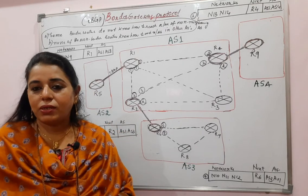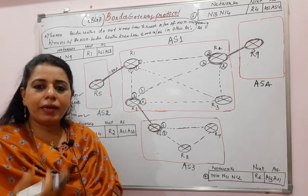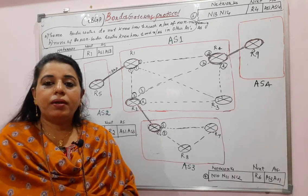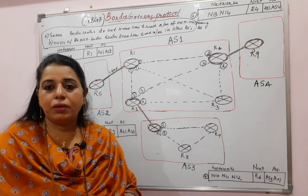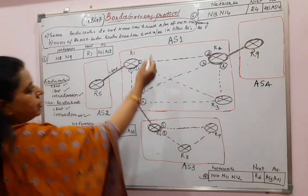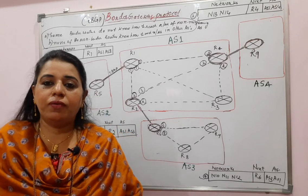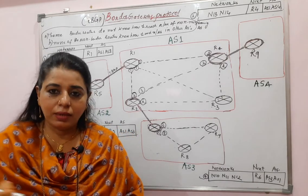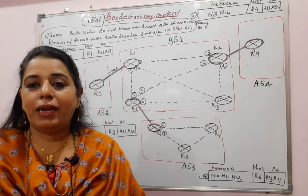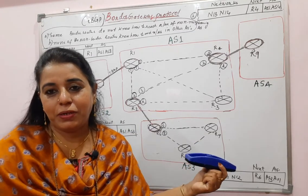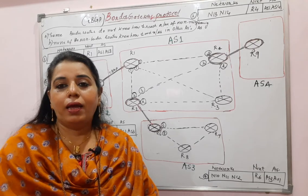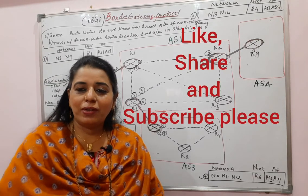If a question is asked on IBGP and no diagram is given, you can draw your own simpler diagram and give the explanation. But if a diagram is given, and the question asks what messages are getting exchanged, write the messages as shown. You can also apply this approach to EBGP. Hope this session is useful to you all. Thank you, bye-bye, take care.